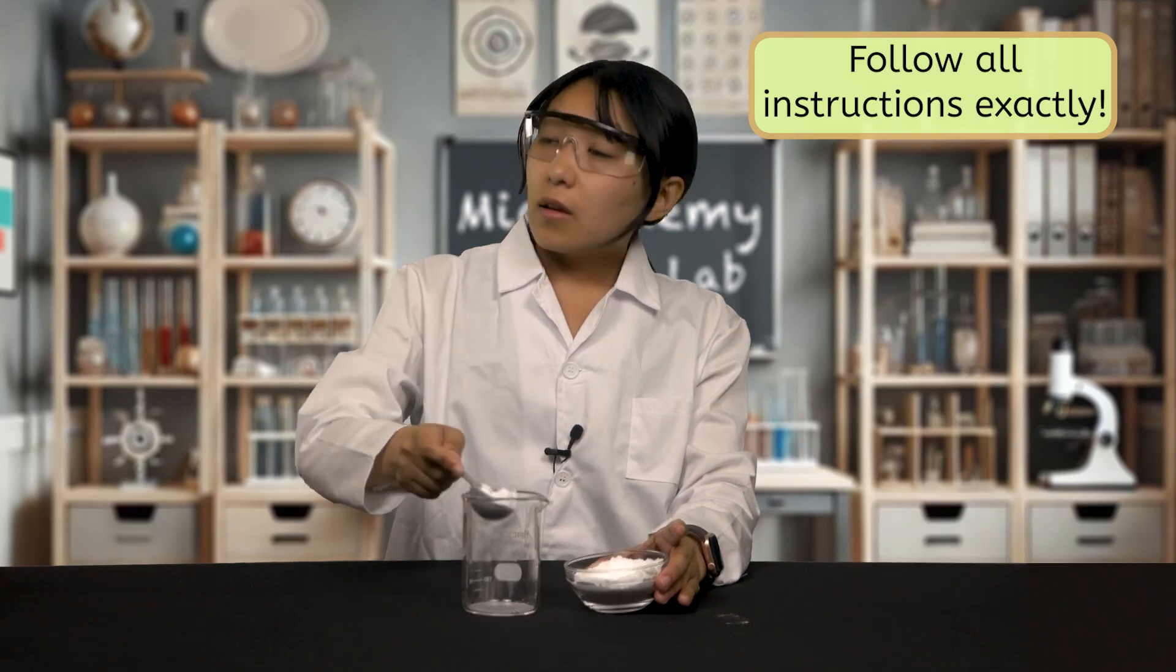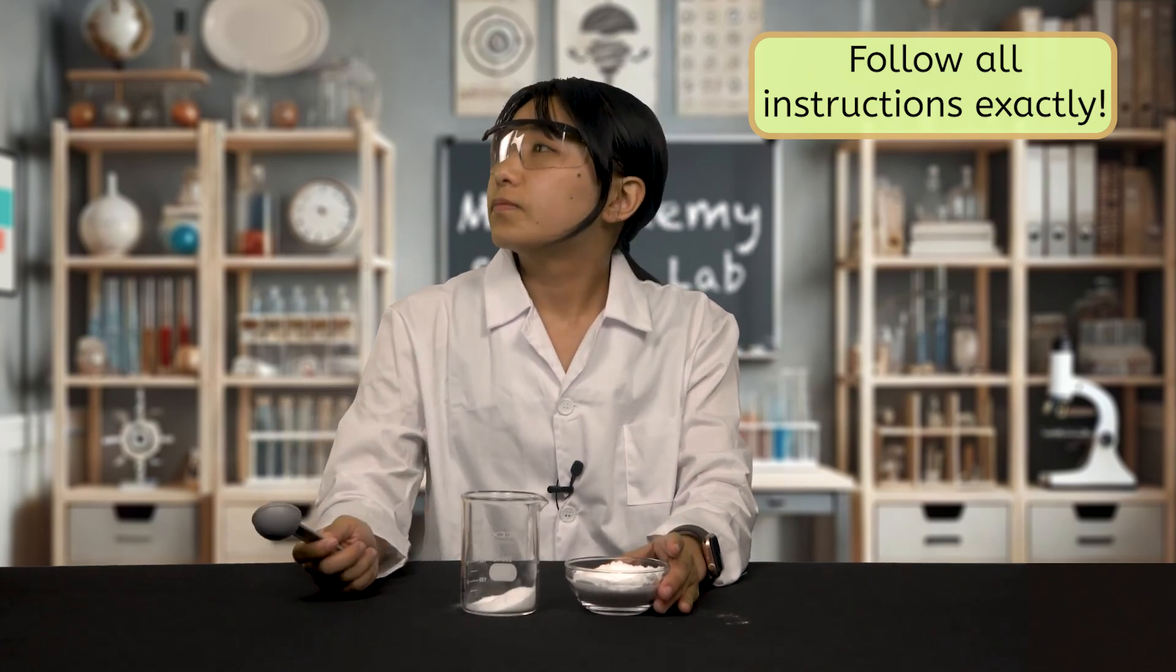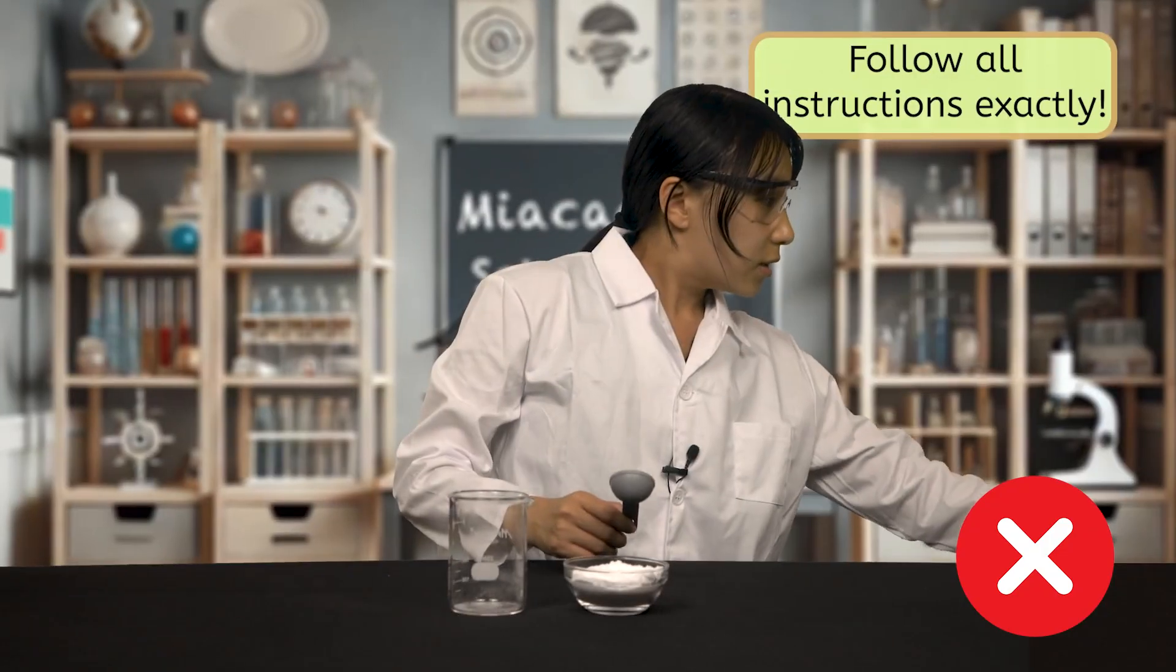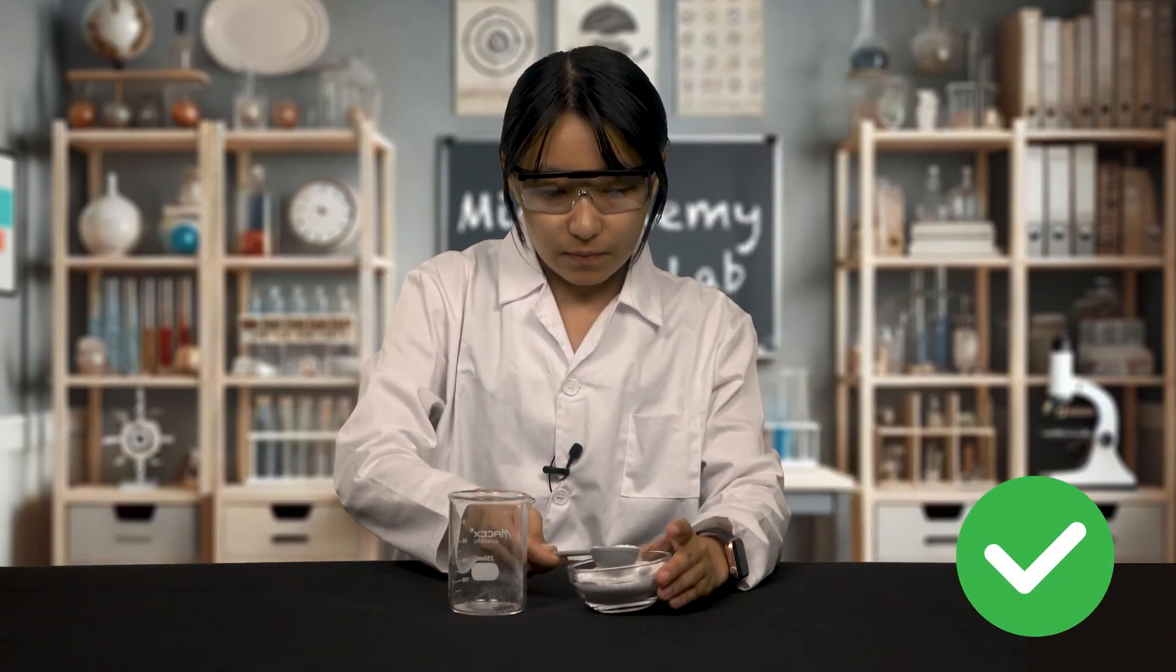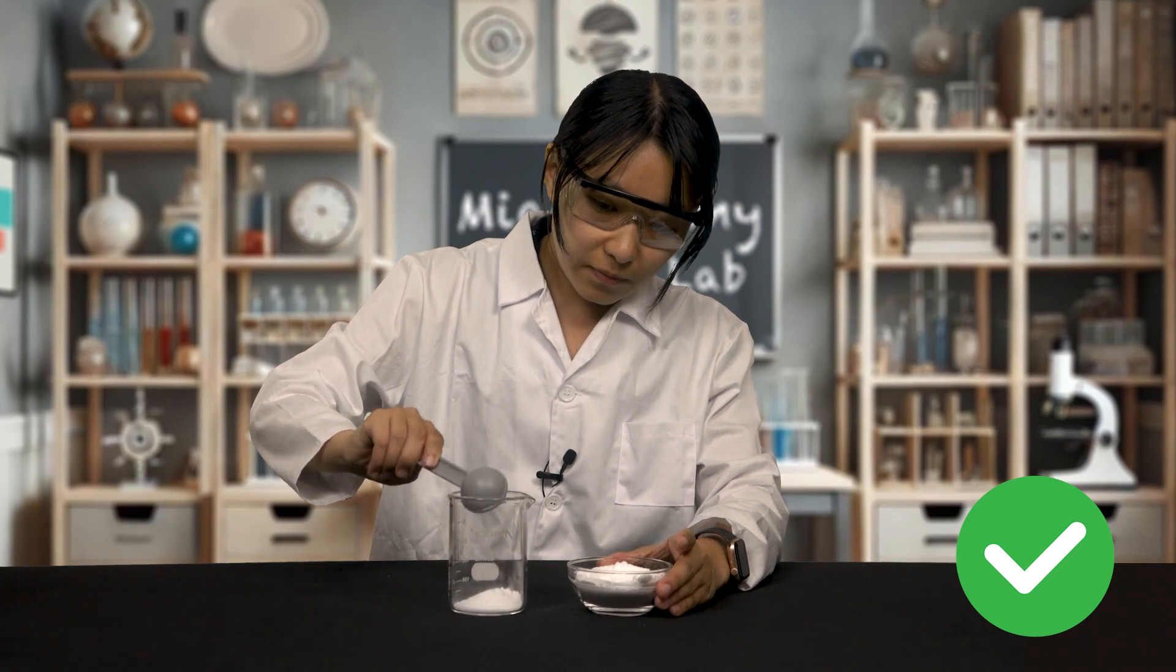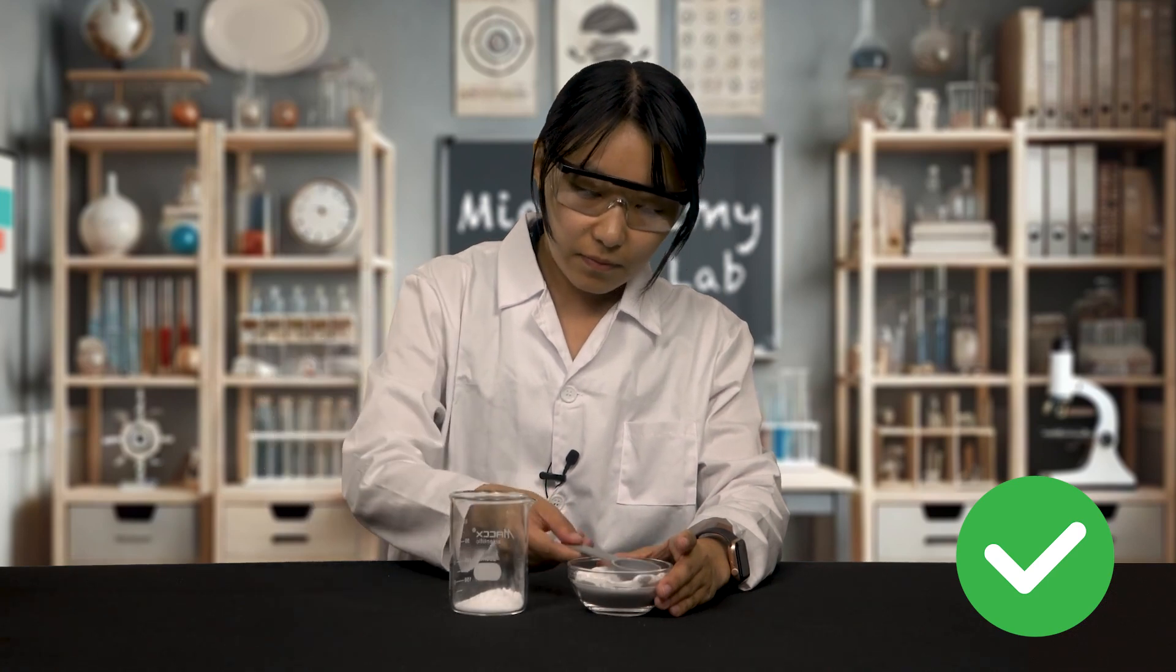Now for the third and most important P, prevent. Prevention is all about building safe science habits so that accidents don't happen in the first place. It's like following the rules of a game to keep it safe and fun. So what exactly are these safe habits? First, follow all instructions exactly. If a lab calls for a tablespoon of baking soda, don't eyeball it. Don't add extra. Measure it. Not only could you mess up your results, but doing things differently from the instructions can be unsafe.